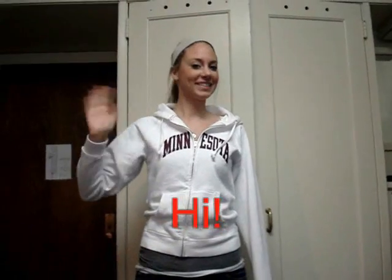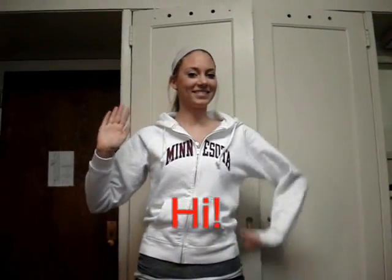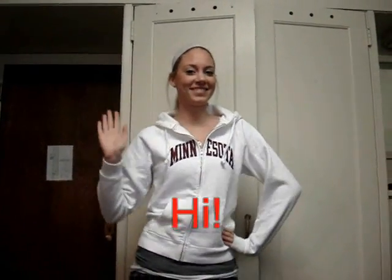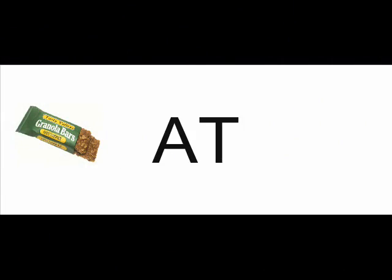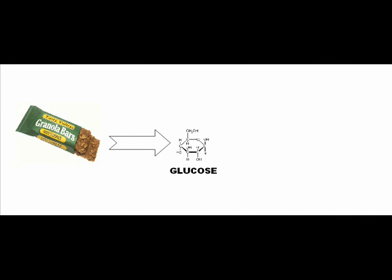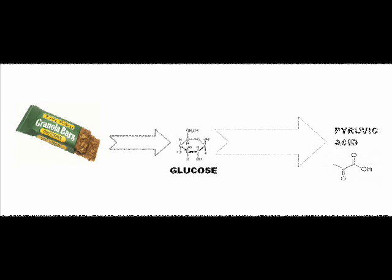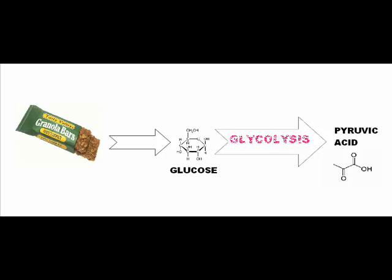This is Samantha. She is going to demonstrate how cell metabolism works during exercise. After eating a granola bar, her food is broken down, releasing energy used to make ATP. Glucose from the bar is converted into pyruvic acid in a process called glycolysis.